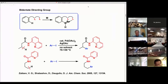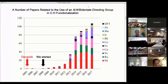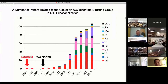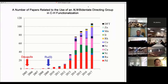Nevertheless, bidentate chelation-assisted C-H functionalization had remained a relatively undeveloped area of research when we initiated this project around 2008. There were only three papers dealing with this subject, and all three involved the use of palladium acetate as a catalyst. In 2009, we reported the first example of a ruthenium(0)-catalyzed reaction using a bidentate chelation system.